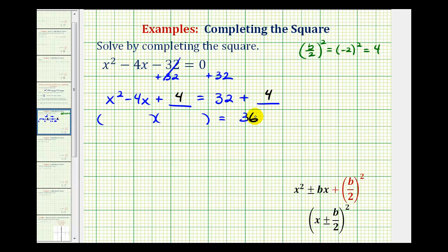So we have the factors of x squared, x and x. The factors of positive 4 that add to negative 4 would be negative 2 and negative 2, so we have minus 2 here and minus 2 here. And now we can write this as a perfect square, where we'd have the quantity x minus 2 squared equals 36.